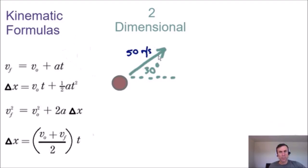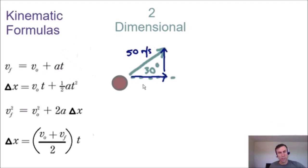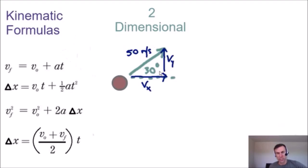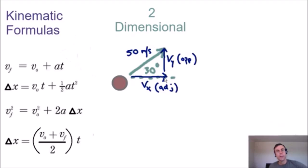Since the ball is moving up and to the right, it has a horizontal component moving to the right and a vertical component moving up. We'll call the horizontal component the velocity in the x direction and the vertical component the velocity in the y direction. We can use trigonometry and right triangles: v_y is the opposite side of 30 degrees, the horizontal side is adjacent, and 50 meters per second is the hypotenuse.